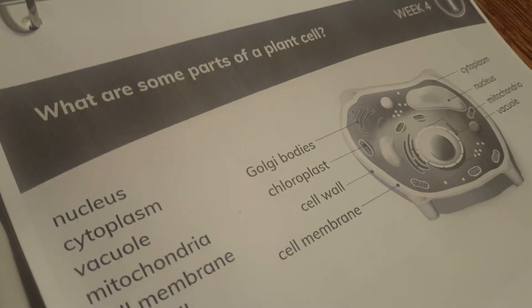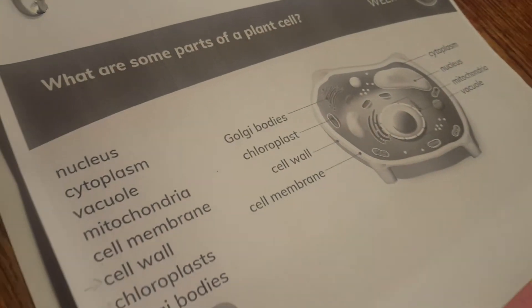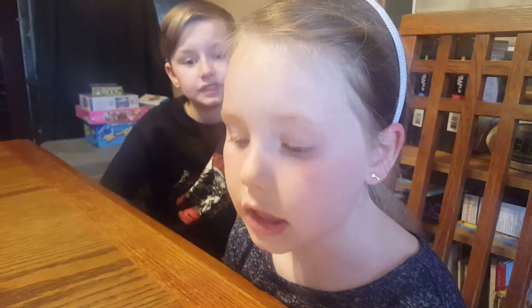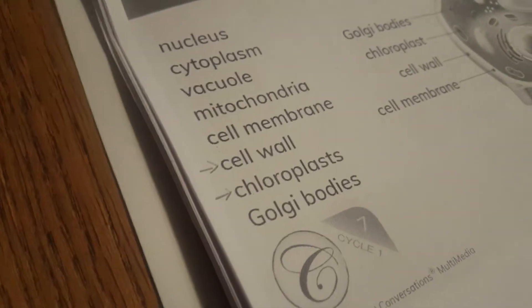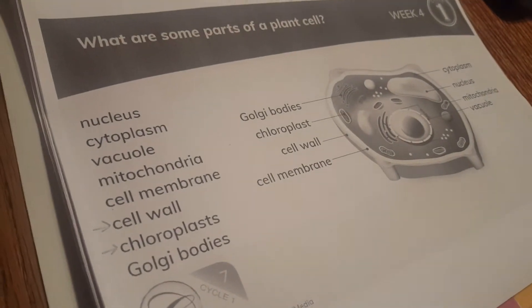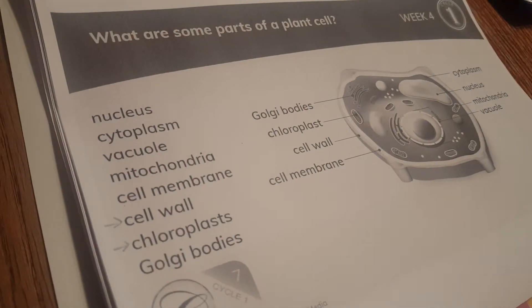Science: what are some parts of a plant cell? Some parts of a plant cell are nucleus, cytoplasm, vacuole, mitochondria, cell membrane, cell wall, chloroplasts, Golgi bodies.